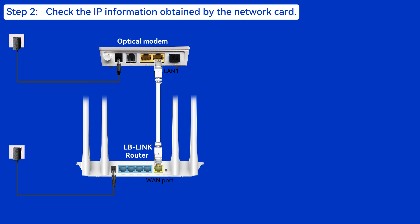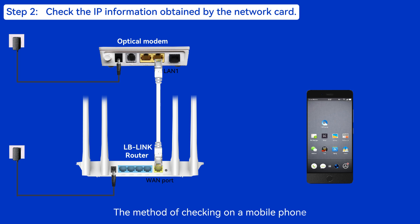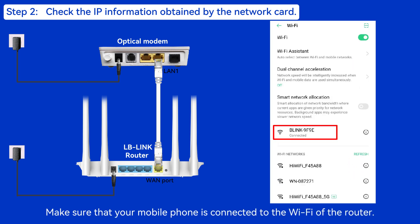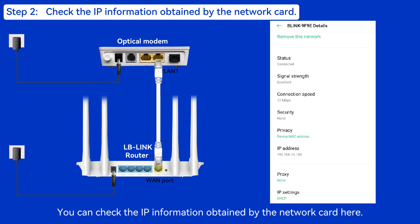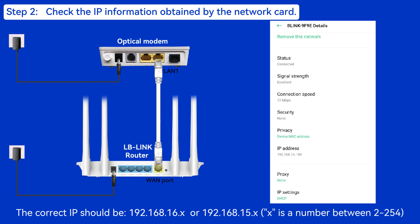Step 2: Check the IP information obtained by the network card. On a mobile phone, make sure your phone is connected to the Wi-Fi of the router. You can check the IP information obtained by the network card there. The correct IP address should be 192.168.1.x or 192.168.0.x, where X represents a number between 2 and 254.